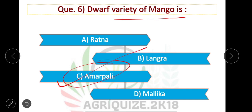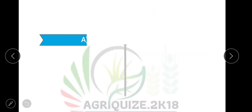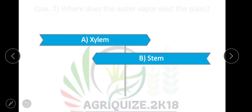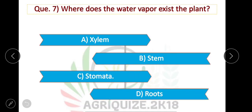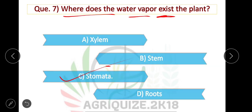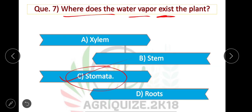Question number 7: Where does water vapor exit the plant? Option C is correct — through stomata, the water vapor exits the plant.